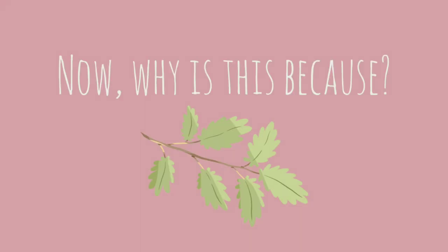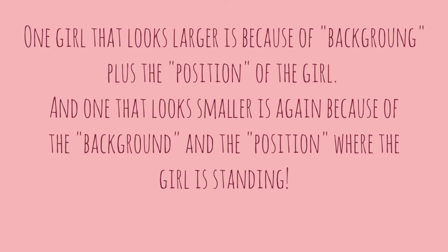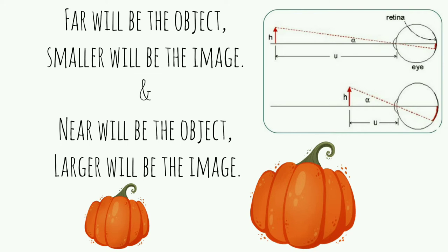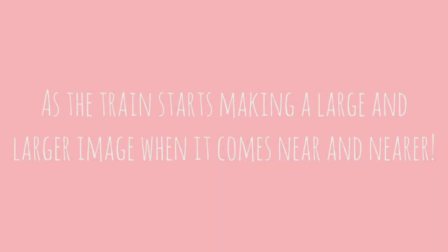Why is this? The girl that looks larger is because of the background plus the position of the girl, and the one that looks smaller is again because of the background and the position where she is standing. The more far the girl is standing, the smaller she will look, and the more near she is standing, the bigger she will look. This is where we can apply the rule of the retina of our eye: the farther the object, the smaller the image; the nearer the object, the larger the image — just as a train makes a larger and larger image as it comes nearer.